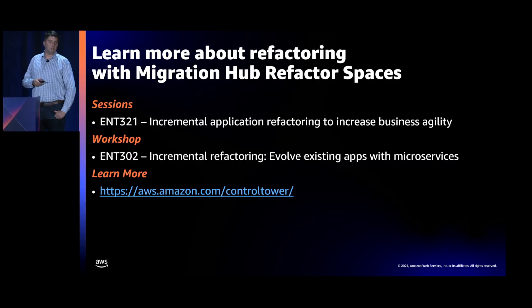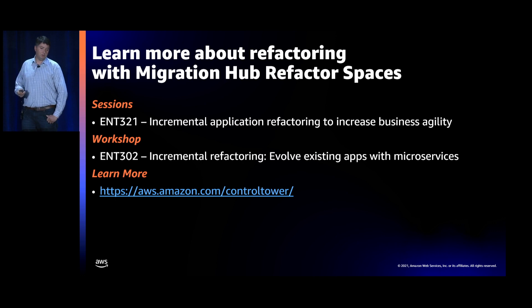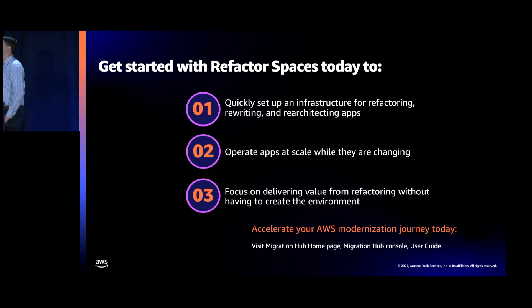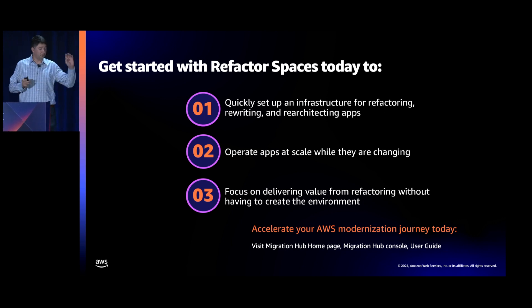Going forward, we have a couple of sessions. If you want to learn more about Refactor Spaces, there was a workshop yesterday — ENT321. If you want to learn more about Control Tower, we have a link there. To get started with Refactor Spaces, it's available today — go to the AWS console, and in Migration Hub you'll see Refactor Spaces. We've got a little over 10 minutes left, so we're going to take questions offstage. If anybody wants to talk more about this, meet us over there. Thank you.